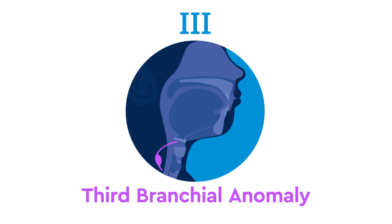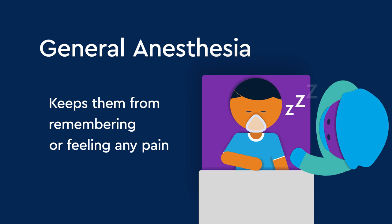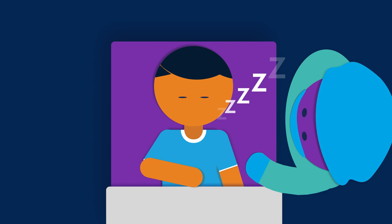Surgical removal is necessary when the cyst, sinus, or fistula begins to drain, becomes inflamed, or forms an abscess. The surgery happens in an operating room. First, your child will be given general anesthesia, a medication that makes your child sleep and keeps them from remembering or feeling any pain during the operation. After your child has fallen asleep, the surgery begins.